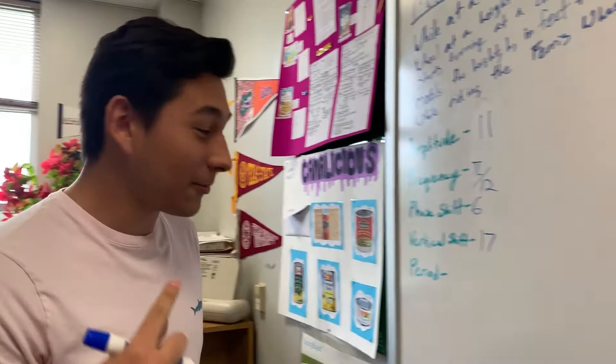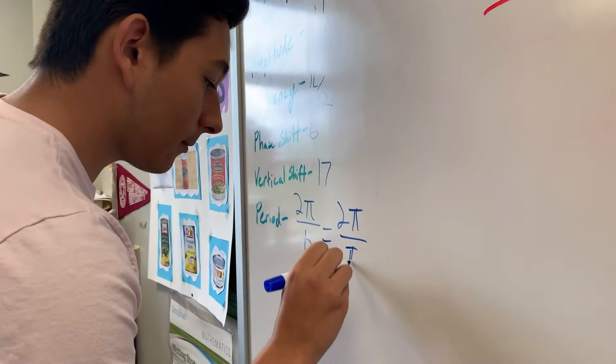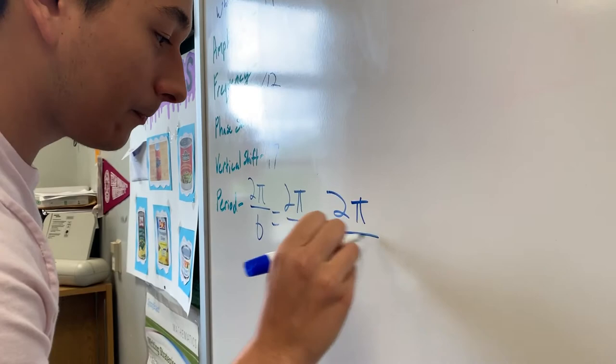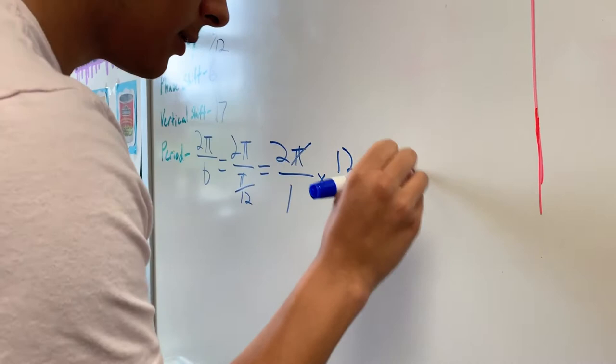And the period is going to be 2π over b, which in this scenario is π over 12. You're going to multiply 2π over 1 by 12 over π. The two pi's are going to cancel out, leaving you with my second favorite number, 24.